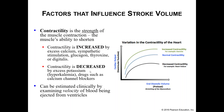Decreases in contractility come from an excess of potassium — hyperkalemia — which prolongs repolarization. Any drugs that block calcium channels would also affect the plateau phase, decreasing the amount of time for the heart to build up the pressure needed to contract more forcefully.